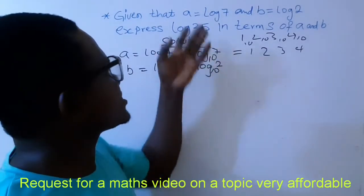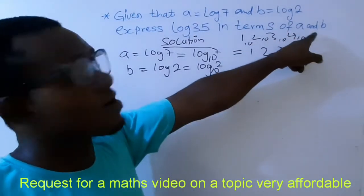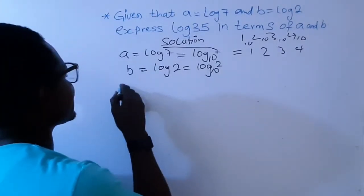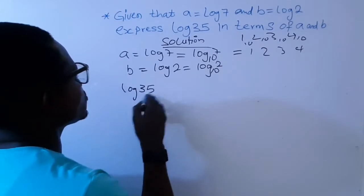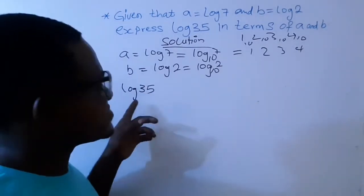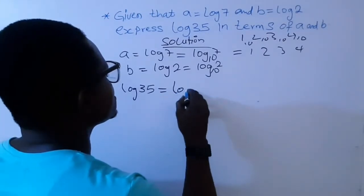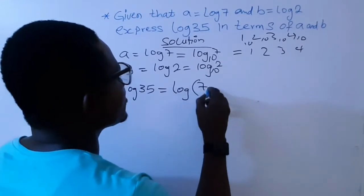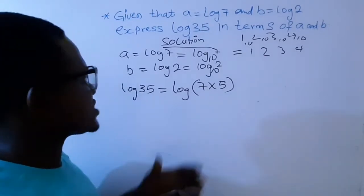Once you notice, let's now bring this log 35 down for us to be able to solve in terms of A and B. So log 35, you can bring this one down to 7 times 5.